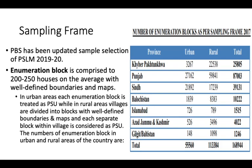Regarding education, the most important thing is that the Pakistan Bureau of Statistics has updated its selection criteria. The sample selection criteria was based on two terminologies. The first was the primary sampling unit. They identified 200 to 250 houses in an area and called them enumeration blocks or primary sampling units. These are district-level categories.